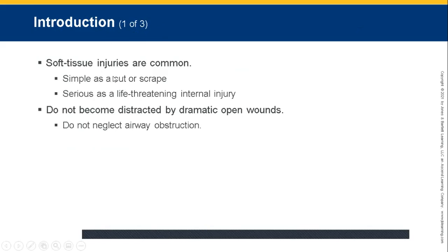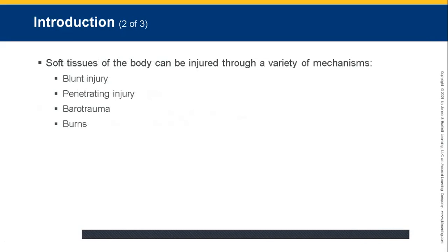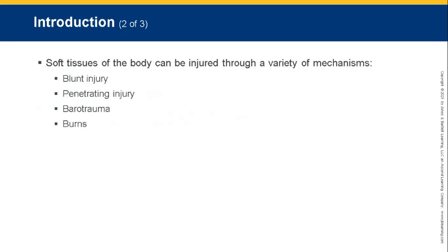They can be as simple as a cut or a scrape, or as serious as a life-threatening internal injury. When life-threatening, it's usually the result of excessive blood loss or systemic infection. Do not become distracted by dramatic open wounds — do not neglect airway obstruction. If you don't have an airway, nothing else matters. Soft tissues can be injured through blunt injury, penetrating injury, or barotrauma — trauma from pressure — and burns.